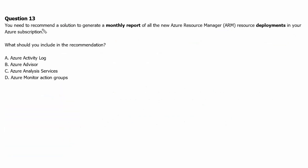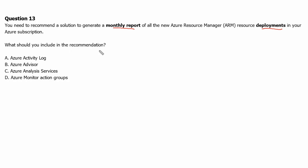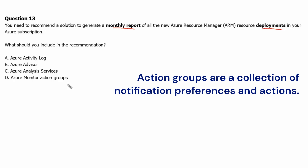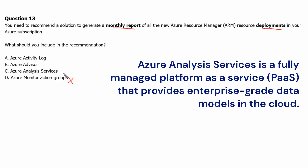Question 13: You need to recommend a solution to generate a monthly report of all the new Azure Resource Manager resource deployments in your Azure subscription. What should you include in the recommendation? Option D: Azure Monitor action groups — these enable you to define a list of actions to execute when an alert is triggered, so they are not useful for generating a monthly report; they are only useful when an alert is triggered. Option C: Azure Analysis Services — this is a fully managed platform-as-a-service that provides enterprise-grade data models in the cloud and is not useful to produce a monthly report of deployments.